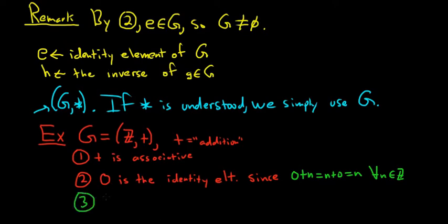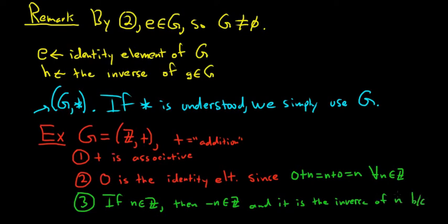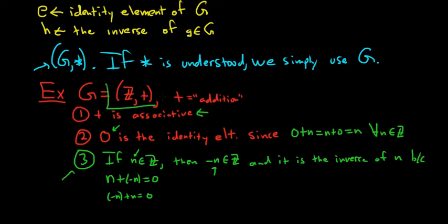And for condition three: if you take an integer n in Z, then negative n is also an integer, so it resides inside Z, and it is the inverse of n. If you take n plus negative n you get 0, and likewise negative n plus n also gives 0. So for each little n in Z we have an inverse element. We have an associative binary operation, the existence of an identity element, and the existence of inverses. So this is an example of a group.